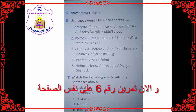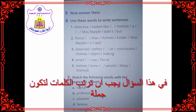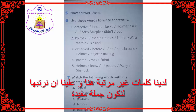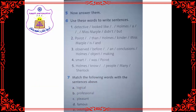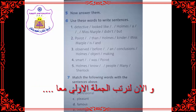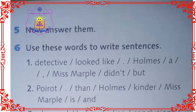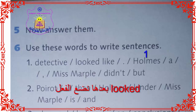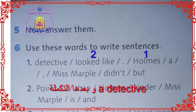Another exercise — exercise number 6. In this exercise you must put the words into the correct order. We have mixed words here and we must order them. Let's make the first sentence together. First of all we will put the subject — 'Homes' will be our subject. Then we need a verb — our verb here is 'looked'. Homes looked like a detective.